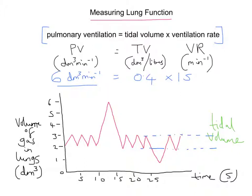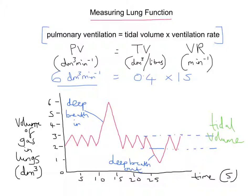Let's look at what's going on elsewhere in the graph. Where we have this big peak, that's where we've had a deep breath in. Equally, down at the bottom where the graph appears to fall, that would be a deep breath out.